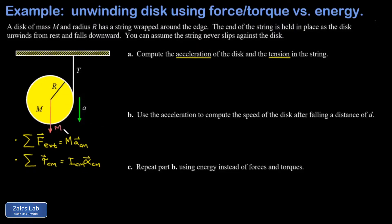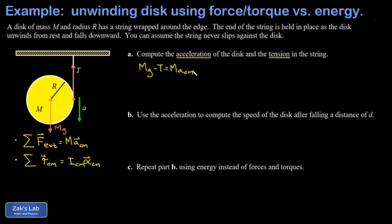The force of gravity is Mg, located at the center of mass. The tension comes off the edge of the disk, tangential to it, pointing straight up. Applying the first equation — sum of external forces equals mass times center-of-mass acceleration — and calling downward positive, we get: mg minus T equals M times a_cm.